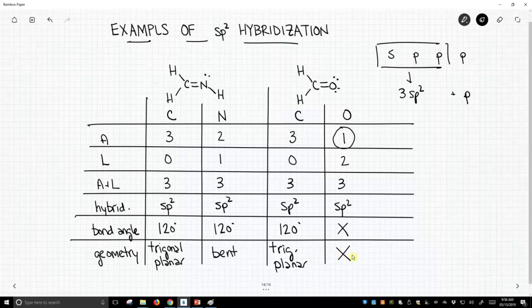Therefore, technically, it doesn't have a geometry either. Now we can talk about geometries and imagine it has geometries, but formally speaking, it doesn't have a geometry. So these are examples of sp² hybridized atoms and how we talk about their bond angles and geometries.